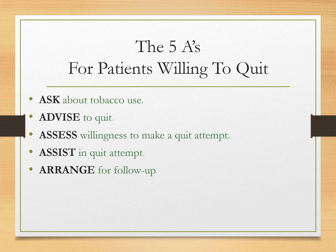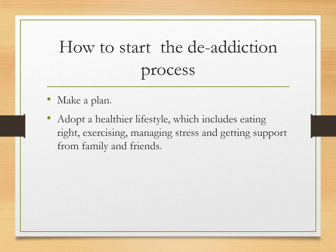If the patient is willing to quit, what strategies are available? For tobacco de-addiction, there are five A's. The first A is Ask about tobacco use — every patient coming to the OPD is asked if they use tobacco. If the answer is yes, we Advise them to quit. Then we Assess the willingness to make a quit attempt — how much is their willpower. Then we Assist in the quit attempt, which includes pharmacological and non-pharmacological methods. Finally, we Arrange for follow-up, as this is not a one-time treatment — patients need follow-up for at least a year.